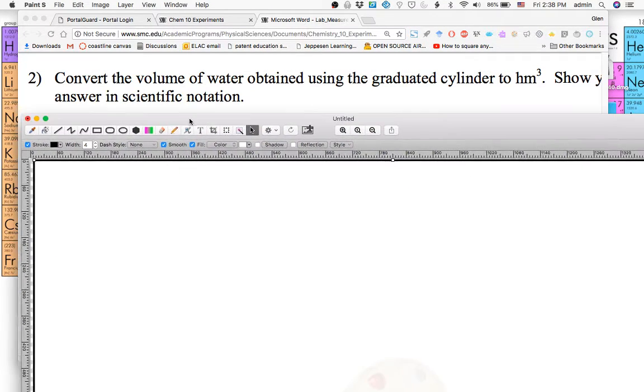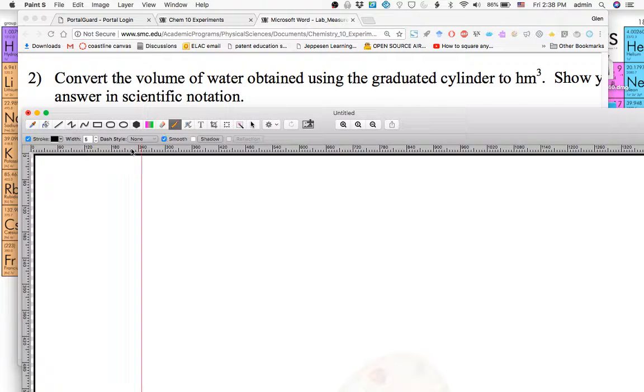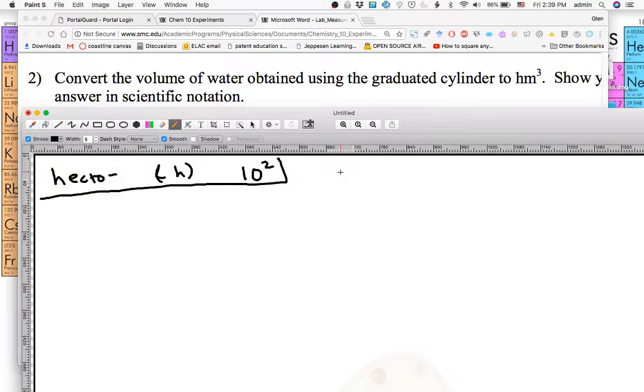The HECTO prefix means 100 or 10 to the power of 2. HECTO, or H in parenthesis, means 10 to the power of 2. So suppose I had, let's say, 37.3 milliliters of water in the graduated cylinder.